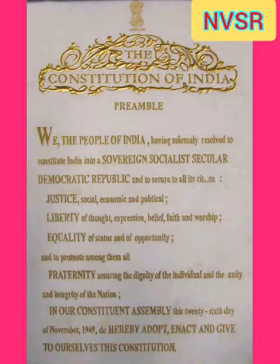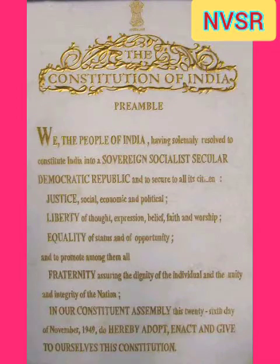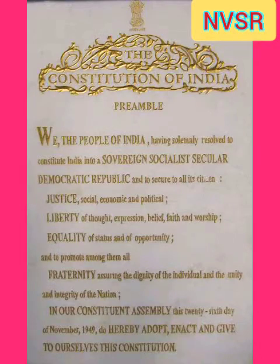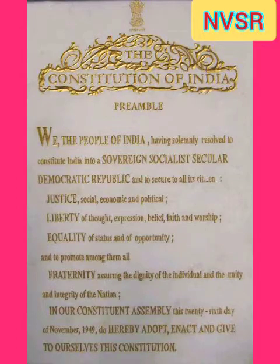Socialist: Even before the term was added by the 42nd Amendment Act in 1976, the Constitution had a socialist content in the form of certain Directive Principles of State Policy. In other words, what was implicit in the Constitution has now been made explicit. Moreover, the Congress Party itself adopted the resolution to establish a socialist pattern of society in its Avadi session as early as 1955. Notably, the Indian brand of socialism is democratic socialism and not communistic socialism, also known as state socialism, which involves the nationalization of all means of production and distribution and the abolition of private property.